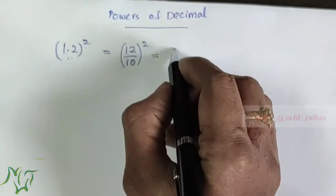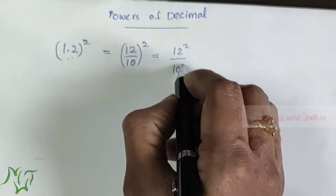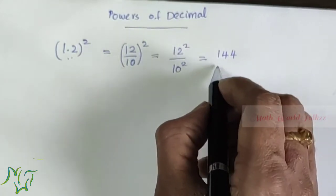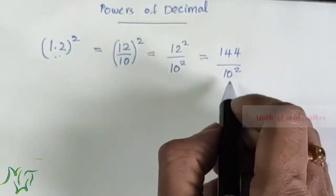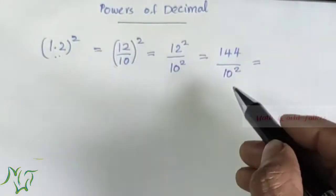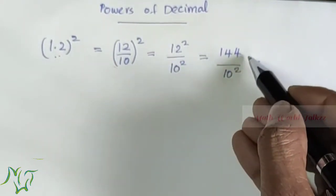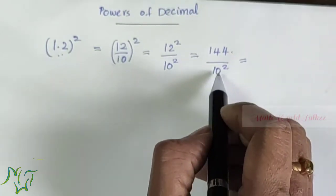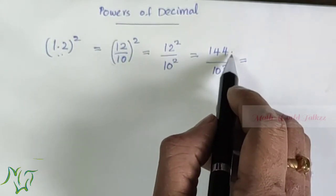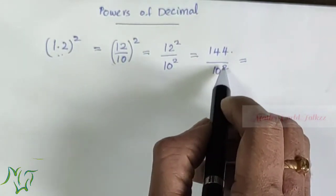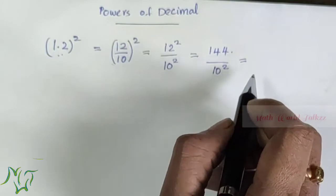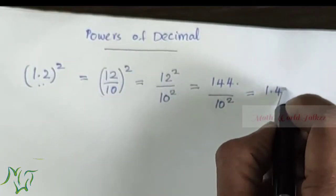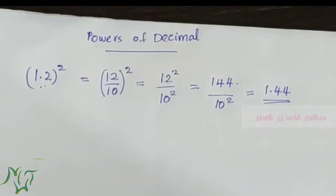We can split this as 12 squared by 10 squared. 12 squared is 144, divided by 10 squared which is 100. Now we need to put the decimal point — there is an invisible point at the end of 144. There are two zeros in 100, so we move the point two places to the left. The answer is 1.44.